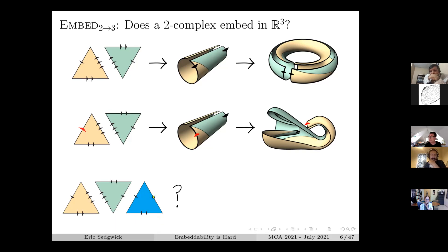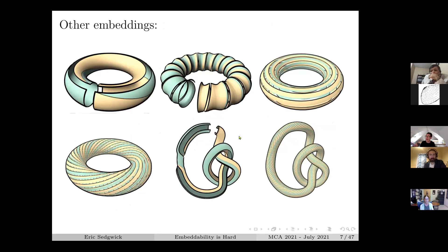In fact, that is the two-skeleton of what's called the one-tetrahedron solid torus. One more thing to note: there are tons of embeddings of that torus - I could have far nastier embeddings - so it's pretty obvious that the embedding may not be unique.